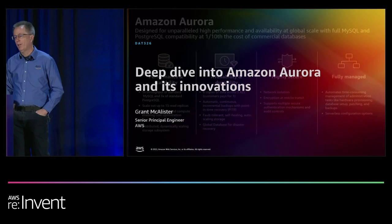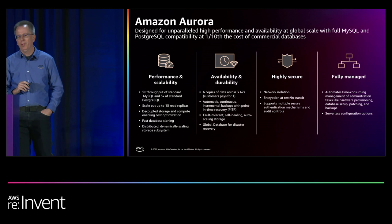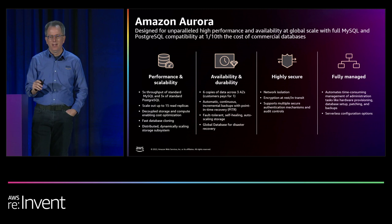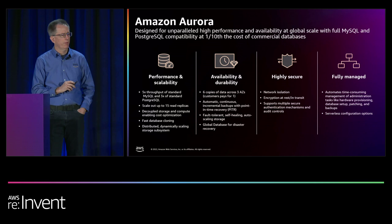So what is Amazon Aurora? The quick summary is this is our cloud-native database. We've taken the best of open-source MySQL and Postgres, and we've added the things that enterprises wanted to see and really built it on top of what we do with the rest of AWS. There are a lot of features, but I want to jump right into the architecture.